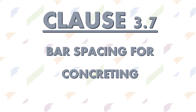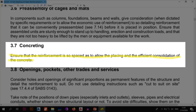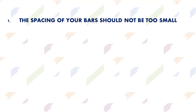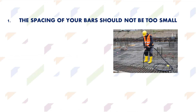Let's look at the first important one, which is Clause 3.7. It's about concreting and it says you need to ensure that the reinforcement is so spaced as to allow the placing and the efficient consolidation of the concrete. What this just means is that the spacing of your bars should not be too small such that you are not able to fit a standard vibrator or poker in between the bars. The standard size that you mostly come across in the industry is about 40 to 100 millimeters.